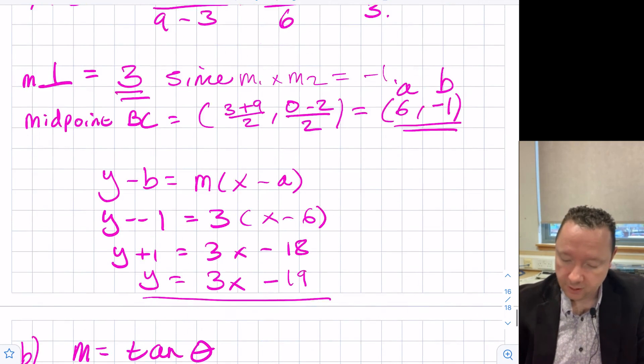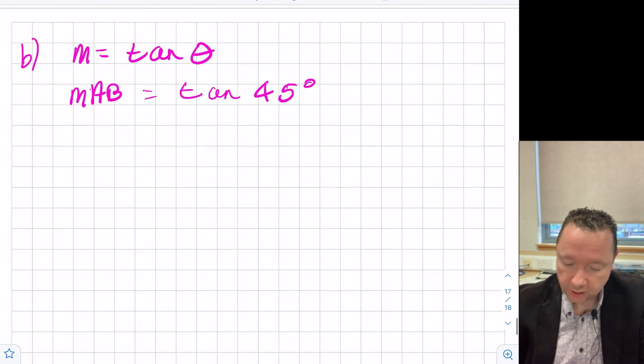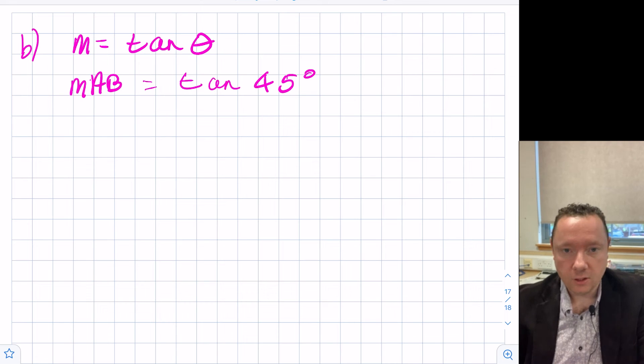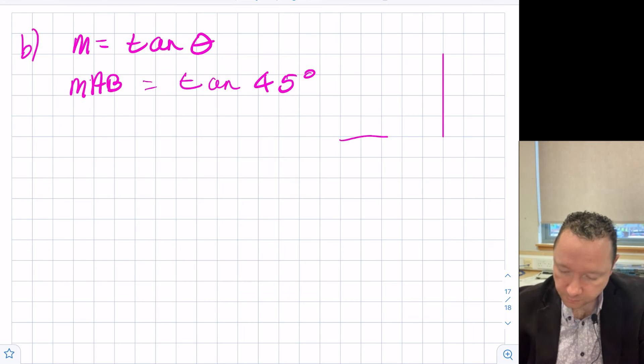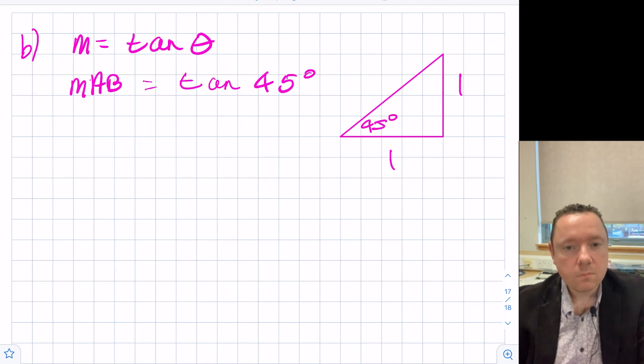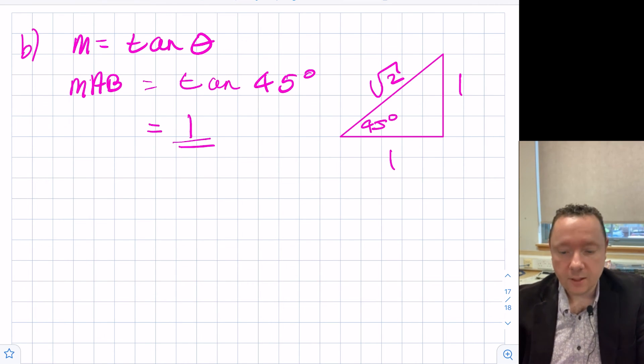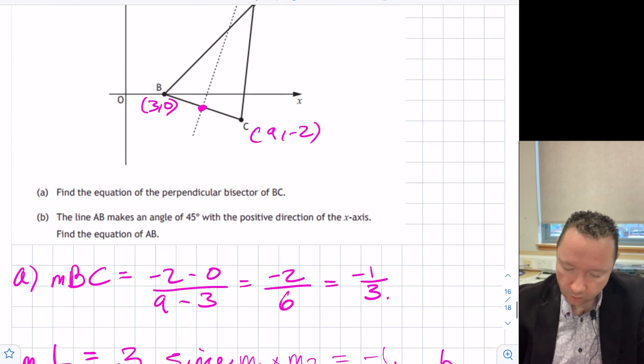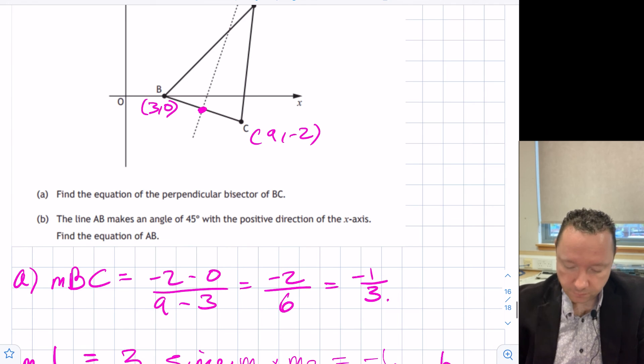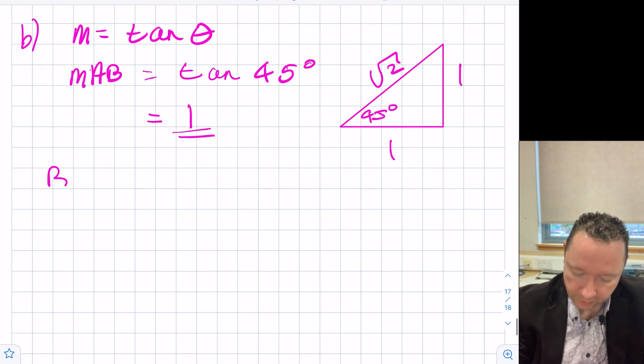This was a calculator paper, paper 2, so you could just use your calculator to work that out, but it is an exact value as well. If I draw a right angle triangle and I want a 45 degree angle, and both of these are 45, which means it must be isosceles, so it's 1, 1. Using Pythagoras, I would get root 2. The tan of 45, even without a calculator, it's just opposite over adjacent, it's 1. So we know our gradient, and we need a point. We've already got b. b is 3, 0. So our point b equals 3, 0.